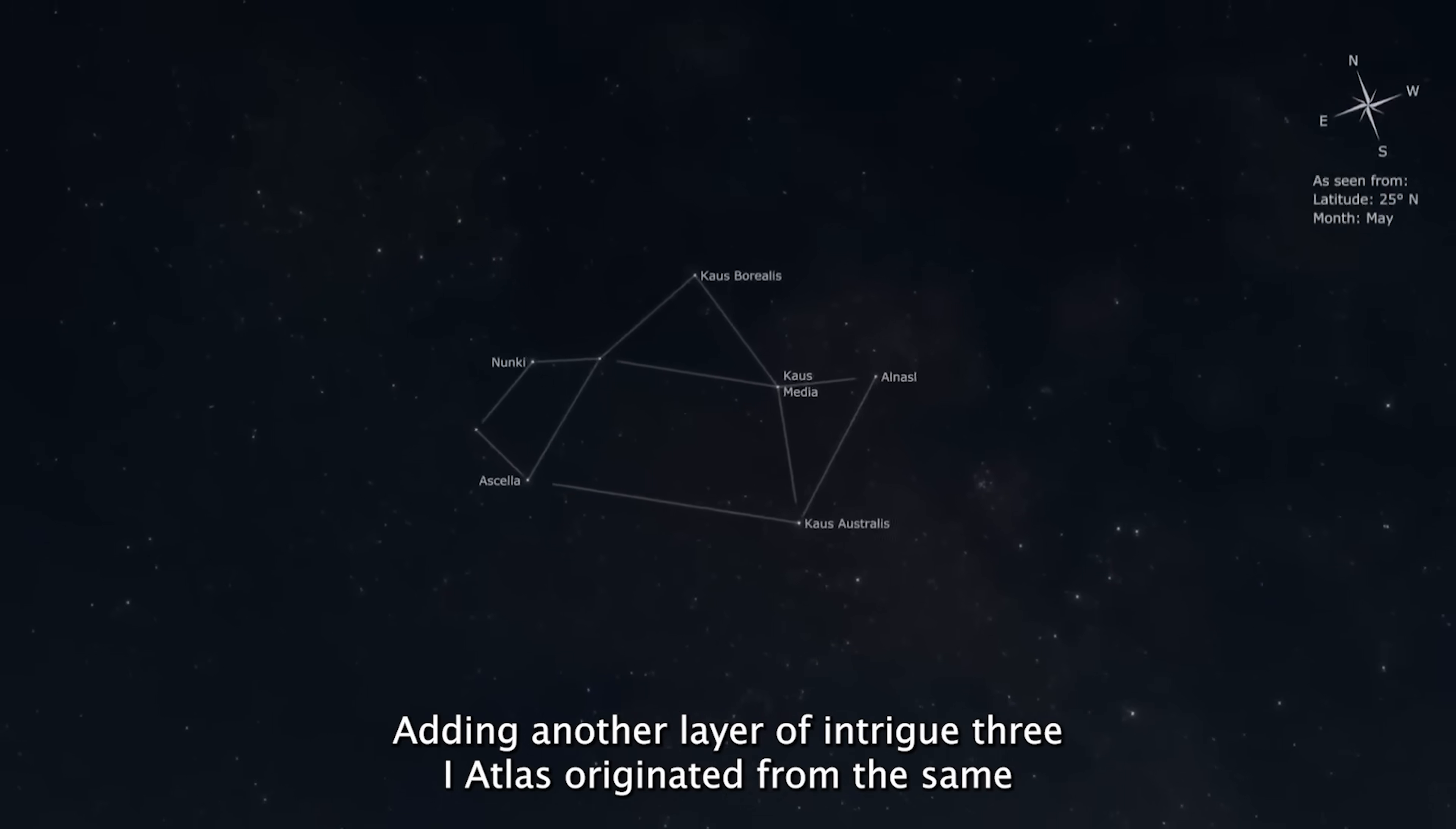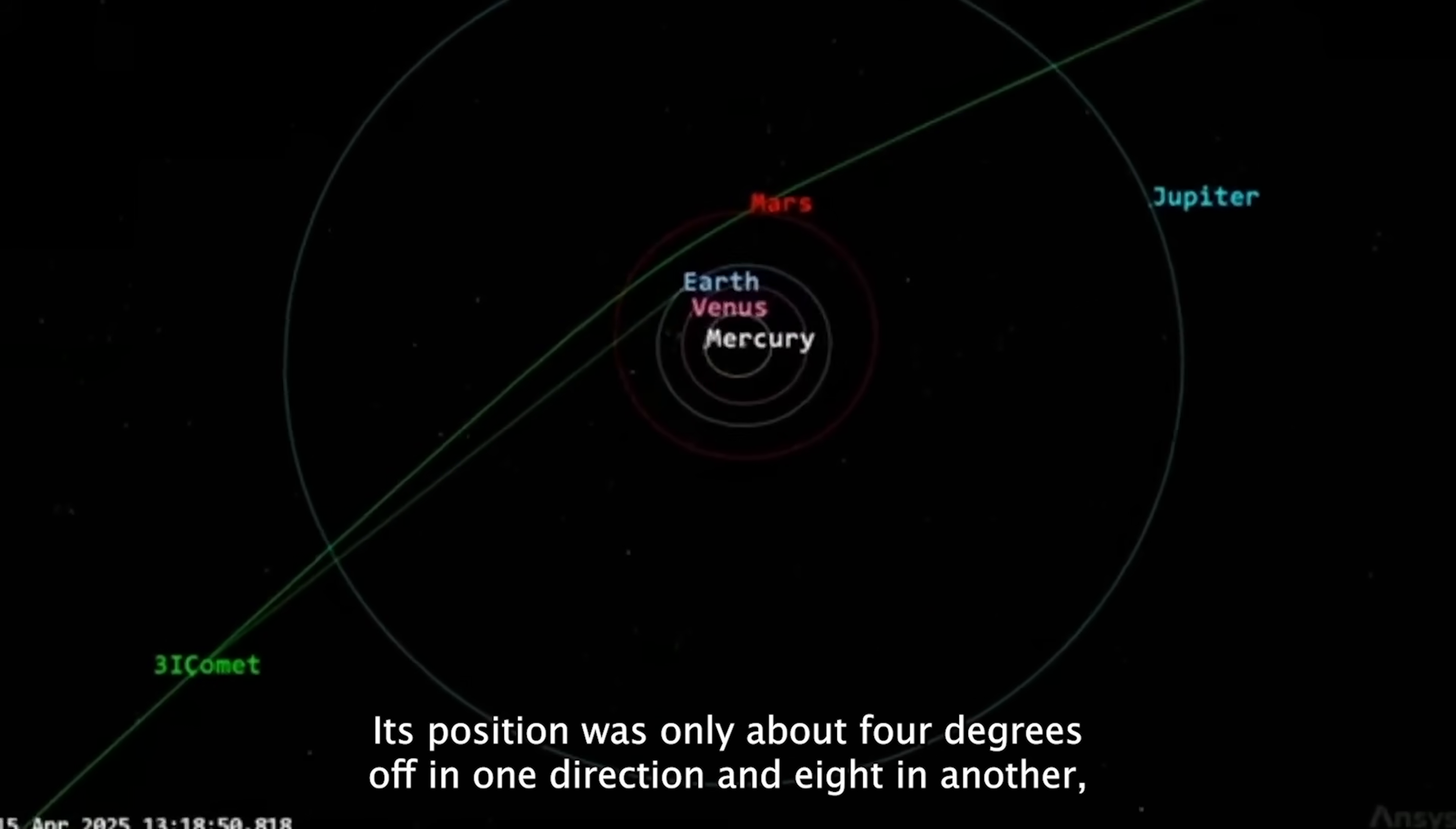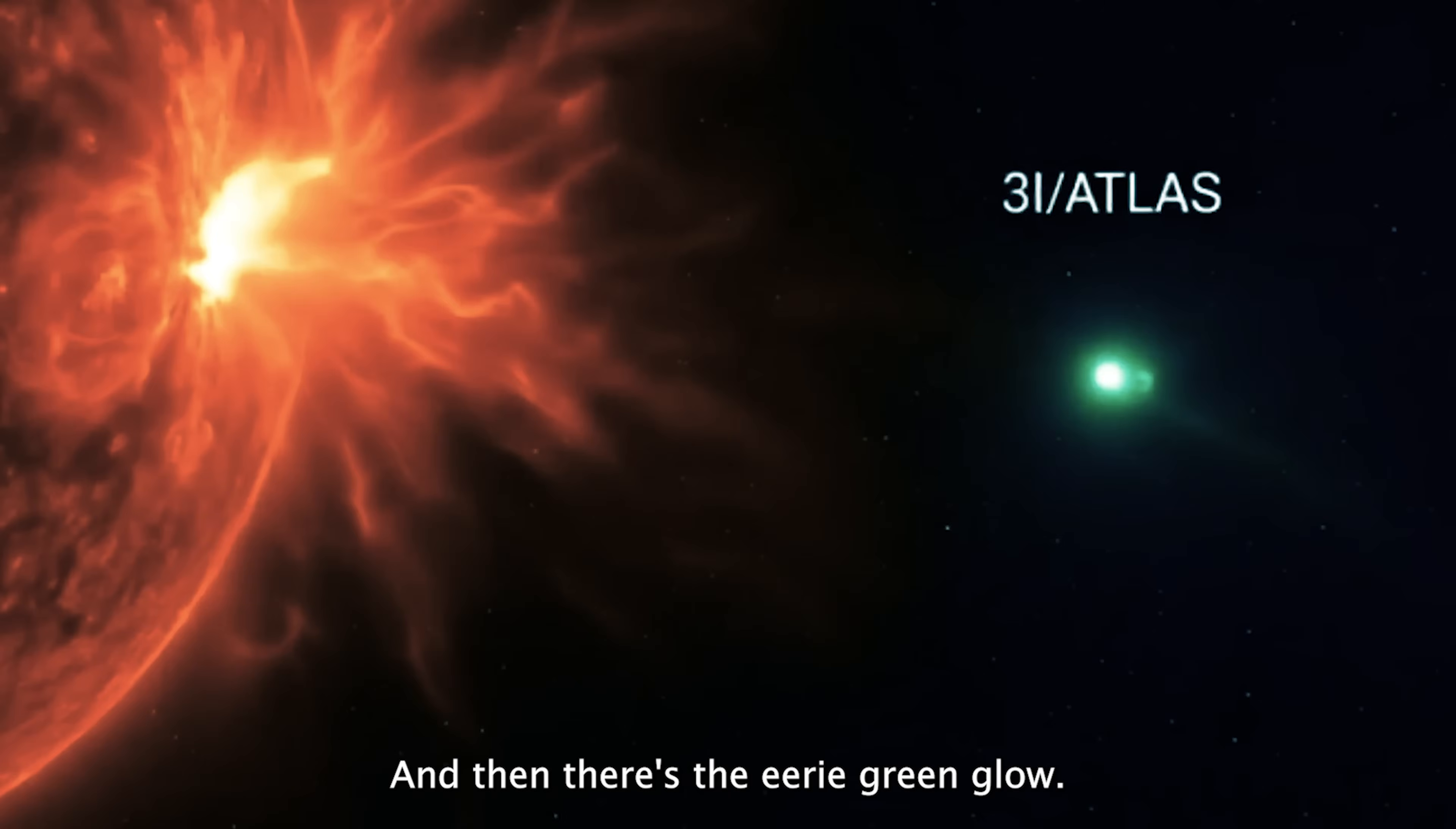Adding another layer of intrigue, 3i Atlas originated from the same region of the sky where the famous WOW signal was detected. When researchers retraced its path to 1977, they found something remarkable. In August of that year, the object occupied almost the same patch of sky as the WOW signal. Its position was only about 4 degrees off in one direction and 8 in another, an extraordinarily tight match considering the vastness of the sky. Statistically, the odds of this happening by pure chance are less than 1%.